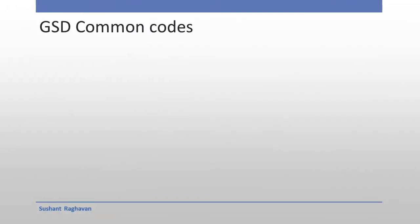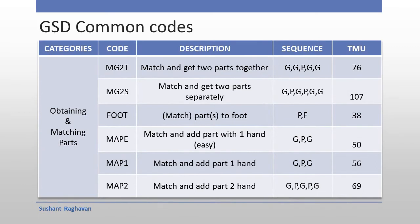GHD Common Codes — Obtaining and Matching Parts category: G2T — Match and get two parts together; G2S — Match and get two parts separately; and Match parts to foot (F).